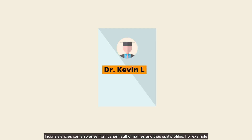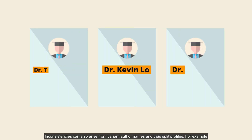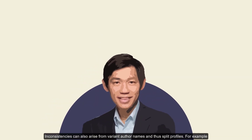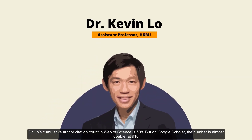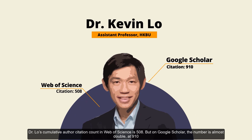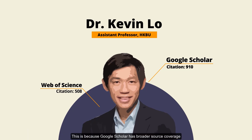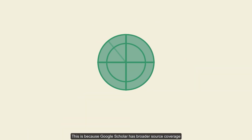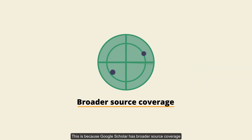Inconsistencies can also arise from variant author names and thus split profiles. For example, Dr. Lo's cumulative author citation count in Web of Science is 508, but on Google Scholar the number is almost double, at 910. This is because Google Scholar has broader source coverage.